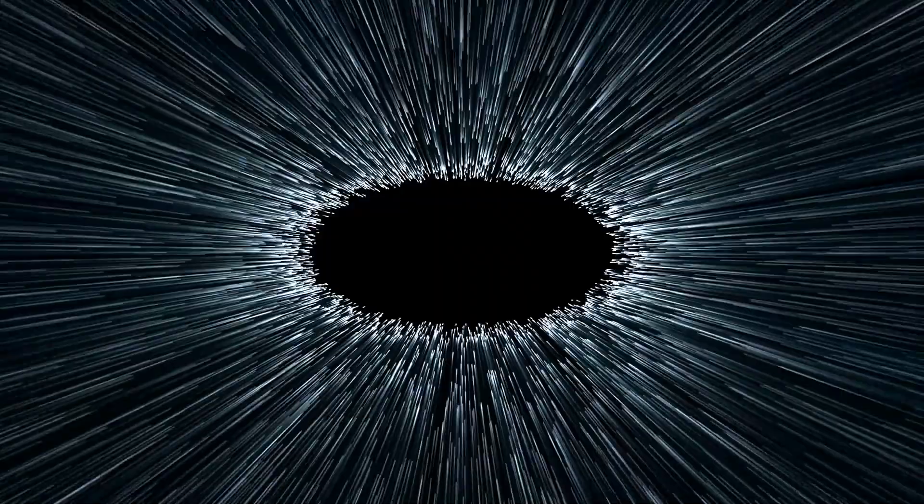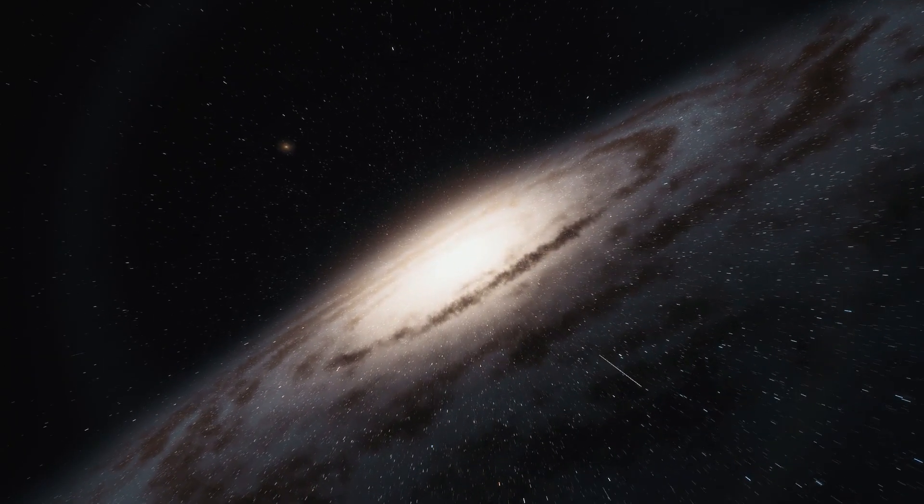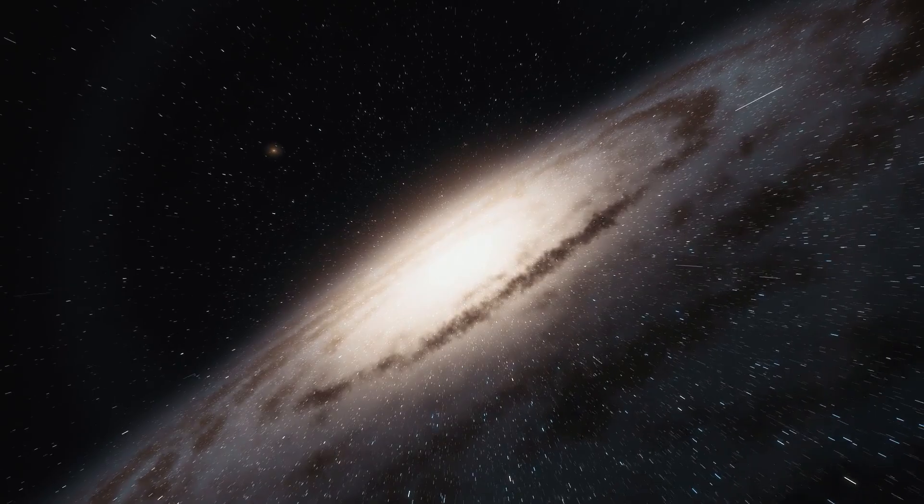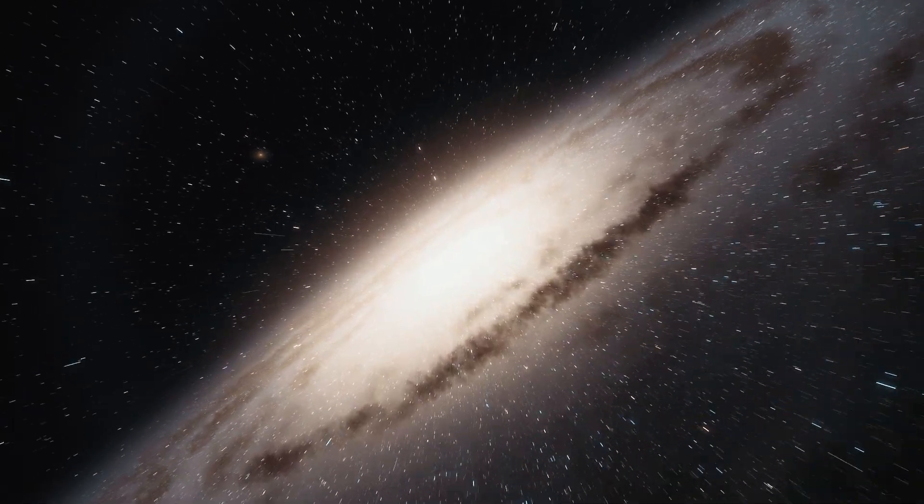Meanwhile, scientists continue to explore the potential for identifying artificial lights on planets beyond our solar system. One such planet that has drawn a lot of attention is Proxima Centauri b, which is located in the habitable zone of the nearest star.